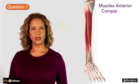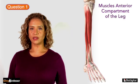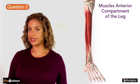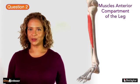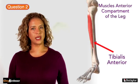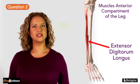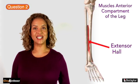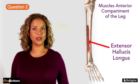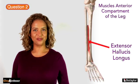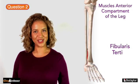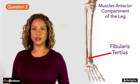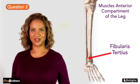Question 2. The muscles found in the anterior compartment of the leg include tibialis anterior, extensor digitorum longus, extensor hallucis longus, and fibularis tertius, which is a small slender muscle that is unique to humans.